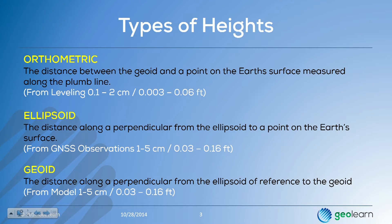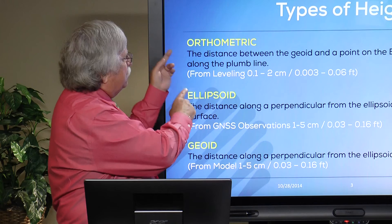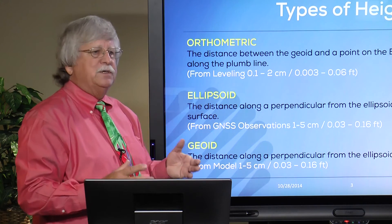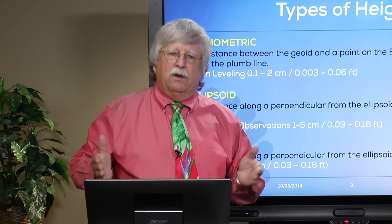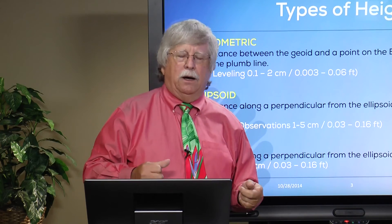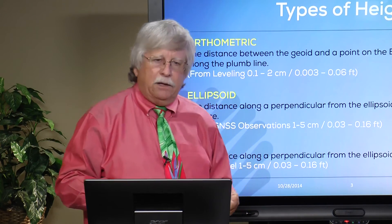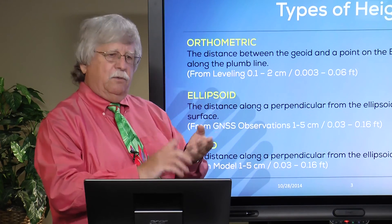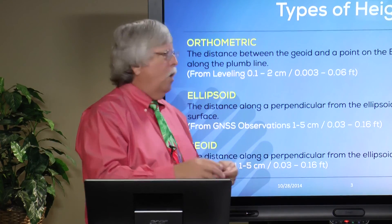There are certainly other types of heights, such as dynamic heights, but they're used much less often, and so we're not going to take the time in this particular class to investigate dynamic heights. We're going to limit our discussion to orthometric heights, which are the heights representative of the North American Vertical Datum of 1988 and the associated datums in the island areas: Puerto Rico, the Virgin Islands, Hawaii, American Samoa, and Guam, that the National Geodetic Survey has responsibility for.